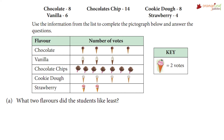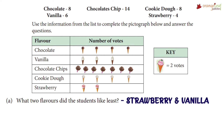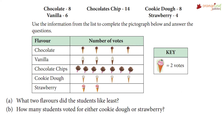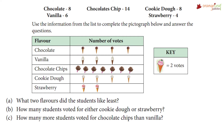So let's answer some questions. What two flavors did the students like the least? The answer is strawberry and vanilla. How many students voted for either cookie dough or strawberry? 12 students voted for cookie dough or strawberry. How many more students voted for chocolate chip than vanilla? 14 students voted for chocolate chip and six voted for vanilla, so 14 minus 6 is 8 — so 8 more students voted for chocolate chip than vanilla.